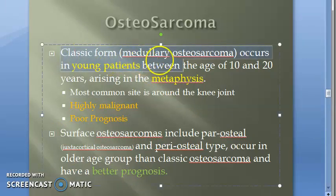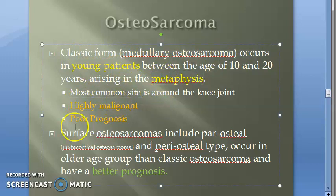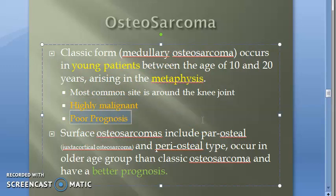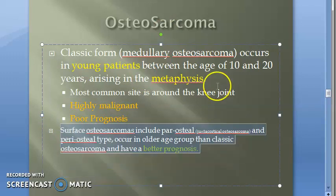The classic form occurs in young patients aged 10 to 20 years. It occurs mainly in the metaphysis. It is highly malignant with poor prognosis — everything bad only for these young people.